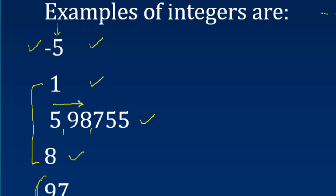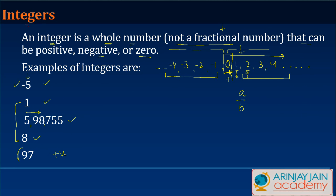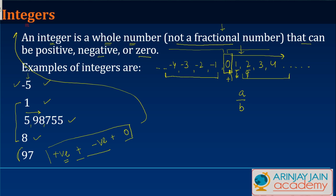Eight is a positive integer, and the minus five we mentioned is a negative one. Ninety-seven is also a positive integer. So integers could be positive, they could be negative, and even zero. All the positive integers, the negative integers, and zero together make the collection of integers — but they are not a fractional number.